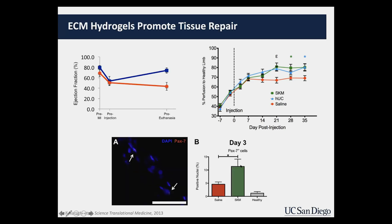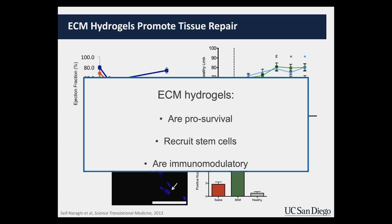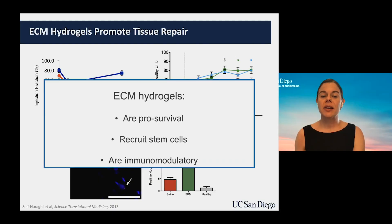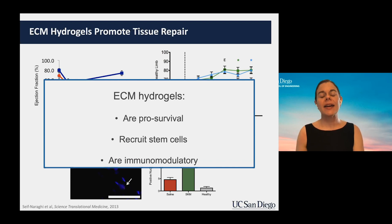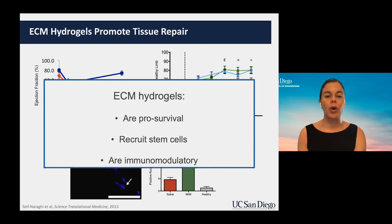We also found that the skeletal muscle material produces increases in skeletal muscle stem cells — these Pax-7 positive stem cells. Overall, we've seen a lot of success with endogenous tissue repair using our ECM hydrogels. Across the board, they are pro-survival, meaning they prevent further cell death and tissue damage; they recruit stem cells; and importantly — especially relevant to COVID-19 — they are immunomodulatory, shifting the response from pro-inflammatory to pro-remodeling and healing.